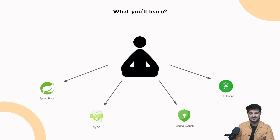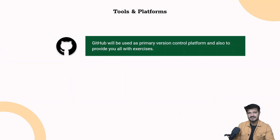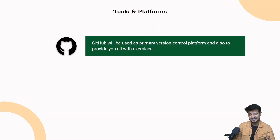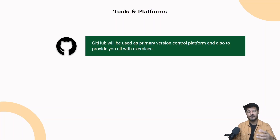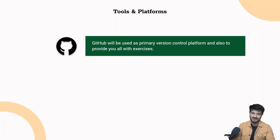Now, what are the tools and platforms we'll use? We'll use GitHub for version control, and I'll also use GitHub to provide exercises. You can clone the project directly, and in each exercise I'll give you one or two tasks to implement yourself, because the best way to learn is by doing. So I'll be providing a lot of exercises where I give you two or three tasks to implement on your own, so things become much clearer.